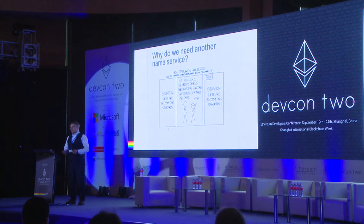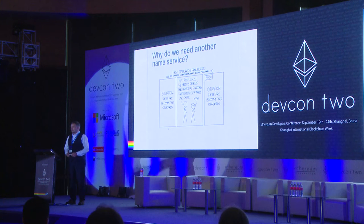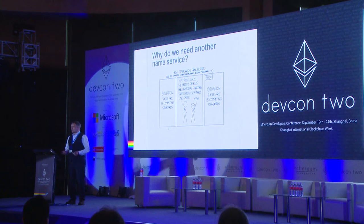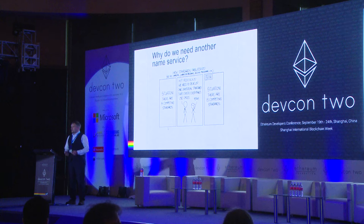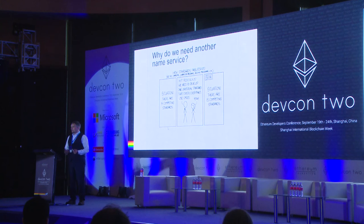As for why we need another one — if you're familiar with name reg, you'll know that this isn't the first name service on Ethereum. The reason is that the existing name services are paradoxically quite centralised. They have a single central contract, there's no facility for upgradability, and there's no facility for adding new record types in the future. So it's useful to build something that, while still being as simple as possible, is a lot more robust and future proof.